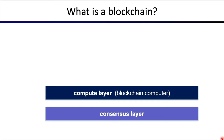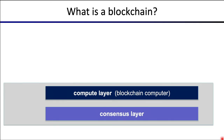The next layer is what we call the compute layer. Once you've established a base layer of consensus, you can define abstract computations on top of this layer. This is sometimes called a blockchain computer — I kind of like this term. We'll talk about applications that run on top of a blockchain computer, and in fact often these two layers are merged together, but I like to keep those two concepts separate.